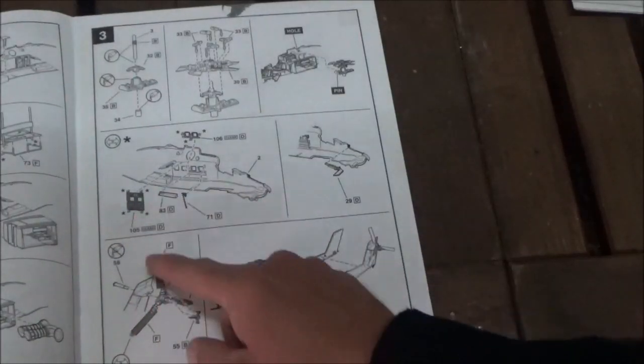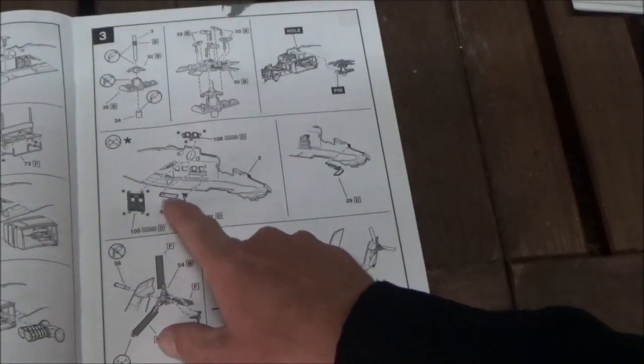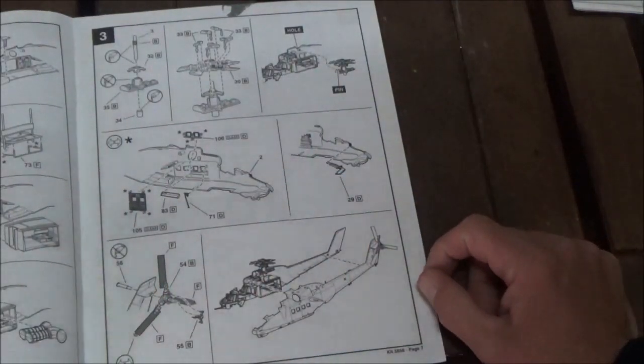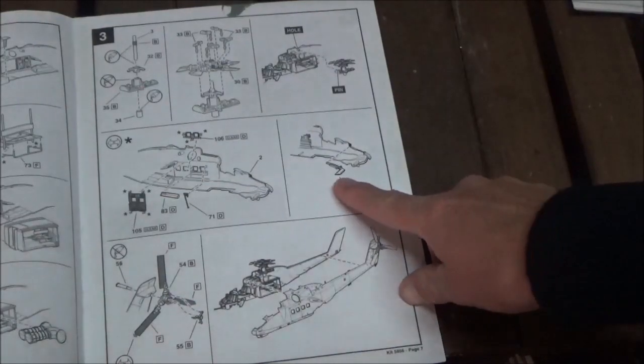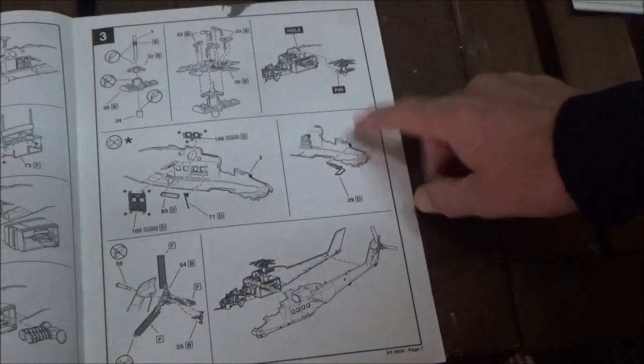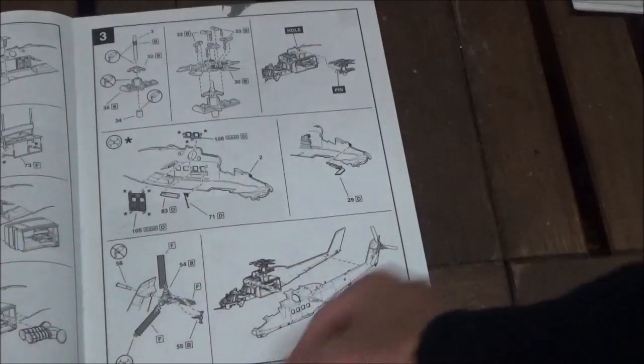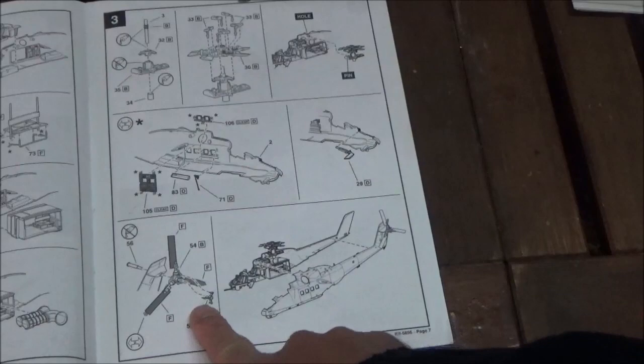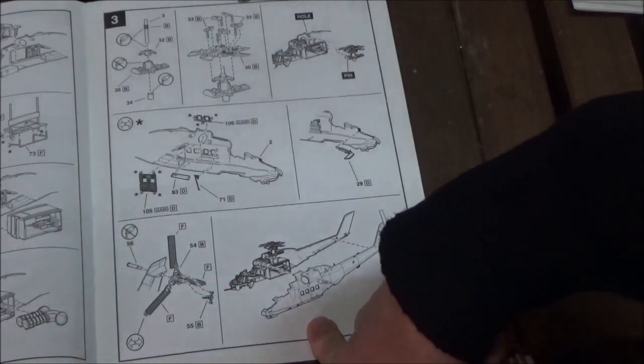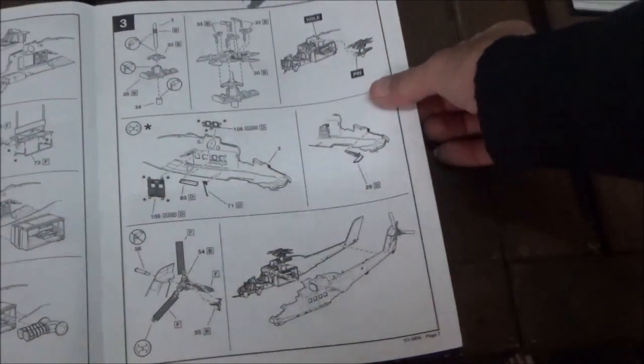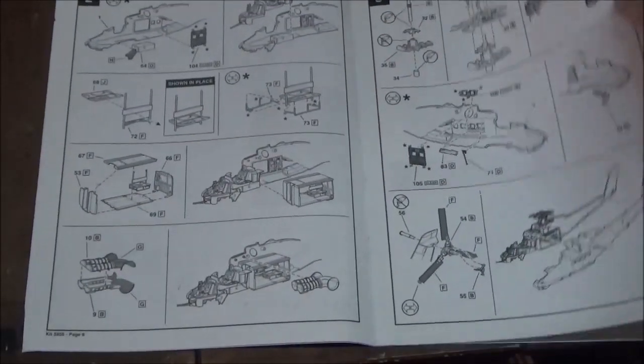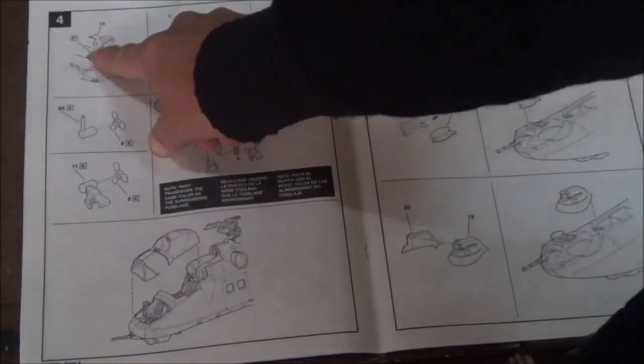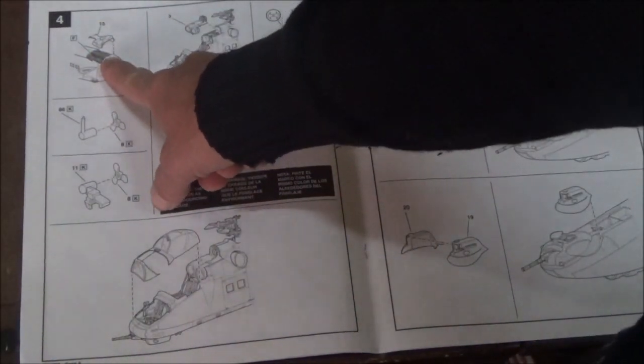Here we have the other troop door, some detail parts for the inside, and the windows. Here we have the part of the cockpit, the dashboard type thing. And here we have the tail rotor and putting the fuselage together.